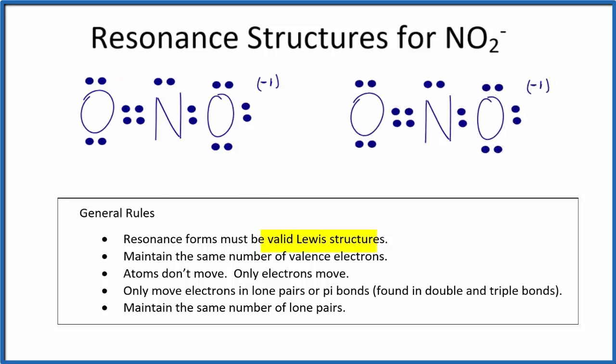You'll note that both resonance structures are valid Lewis structures and have the same number of valence electrons. We've not moved any atoms. All we can do when doing resonance structures is move electrons.